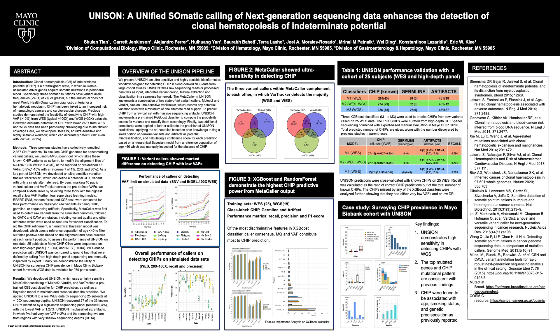Previous seminal studies demonstrated the feasibility of identifying CHIP with regular whole exome sequencing or whole genome sequencing, where the coverage is usually not optimal. The limitation is that they can typically detect variants with a VAF above 10%. Here we developed UNISON, an ultra-sensitive and highly scalable bioinformatic workflow which can accurately detect CHIP even with a much lower VAF.